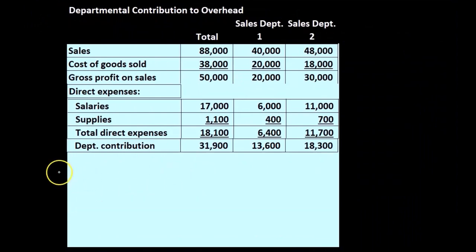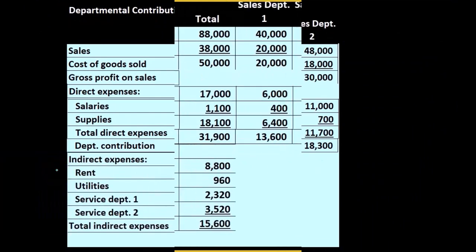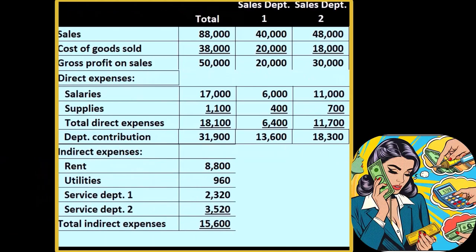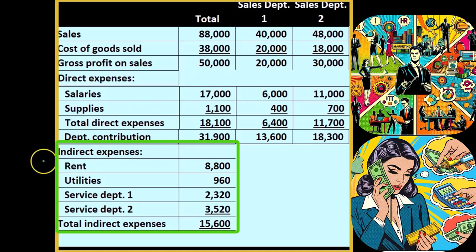This is one reason we break things out in this format. Then we have the indirect expenses — these are the amounts that we're going to allocate, such as rent, utilities, and service department costs. These are expenses that if we were to eliminate one of the departments, we possibly would not be eliminating, or at least not all of them, because when we allocate them out it's just an allocation. These costs may be there even if the department was not there. It helps with some decisions, but we need to keep in mind that it is simply an allocation.